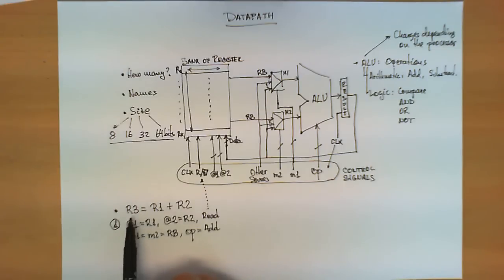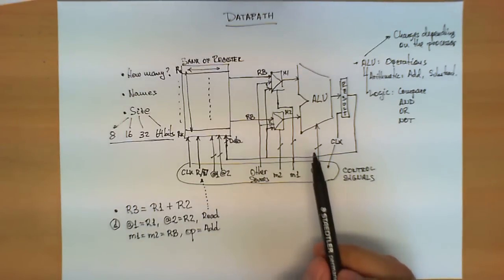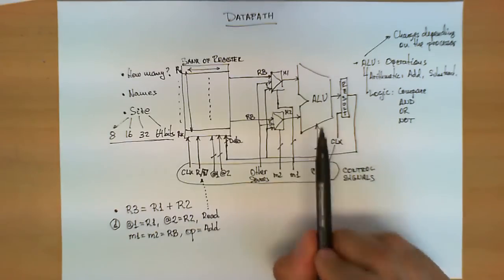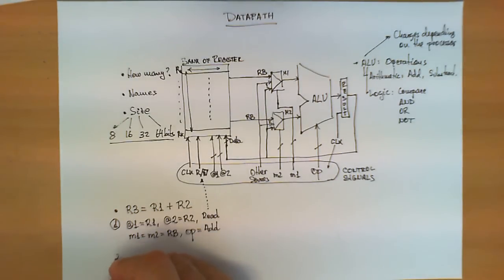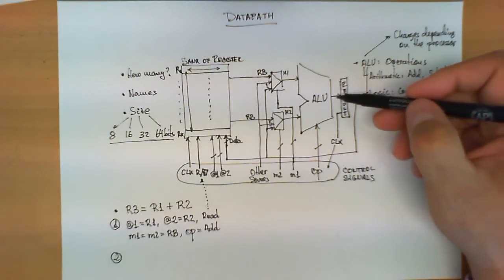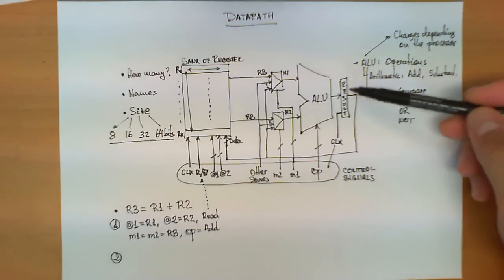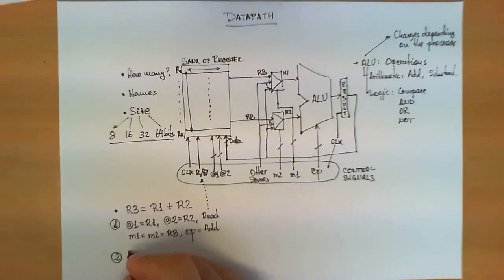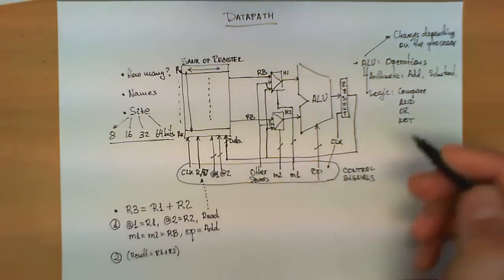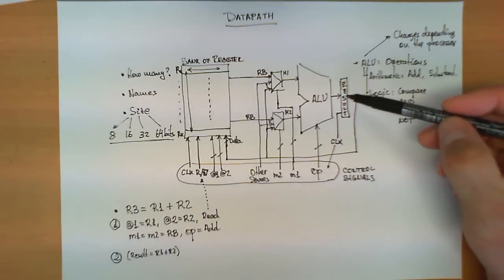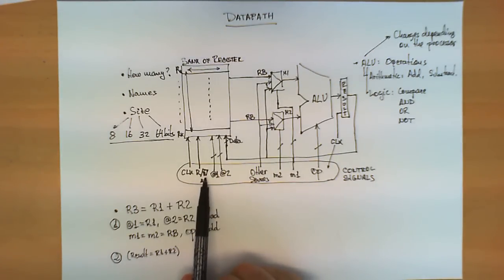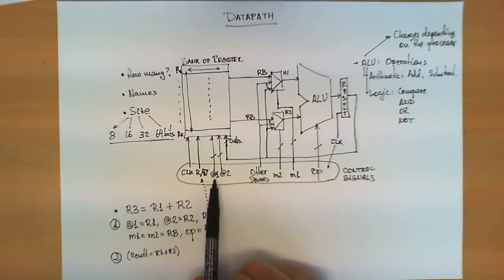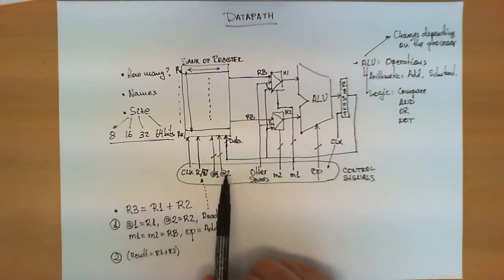This would be the initial step. R1 and R2 are being added in the ALU. Because the result register is controlled by a clock, we have to wait for the next clock tick — step number 2. At the next step, we guarantee that the addition of R1 and R2 is now stored in the register called result. Now what needs to be done is feed this result back to the bank of registers. The read-write signal has to be set to write, and address 1 will be set to R3 for the write operation to occur.